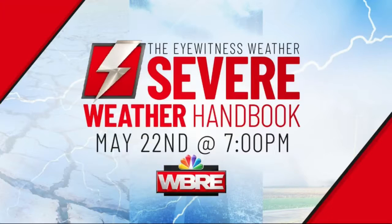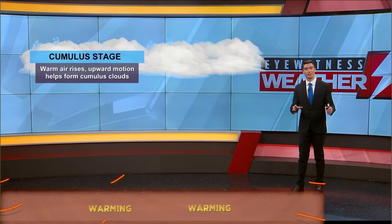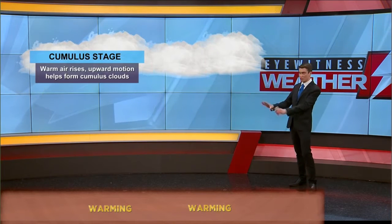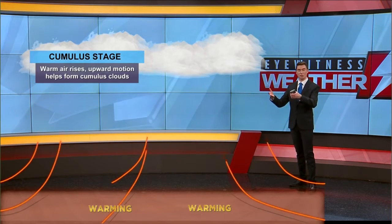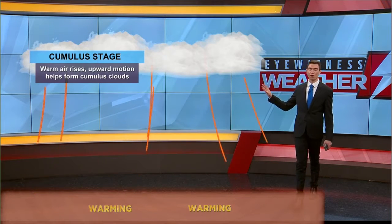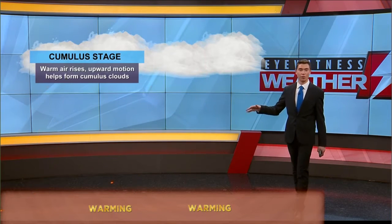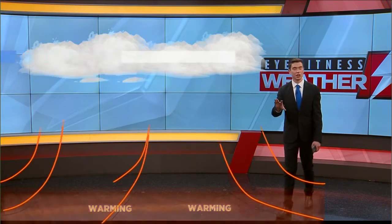Let's talk about the formation of a thunderstorm and the life cycle we see during the spring and summer months. It starts with sunshine — that's the key factor to get those clouds to form. Sunshine heats the surface of the earth, and that warm, rising air rises to the condensation level, where we start to see cumulus clouds forming.